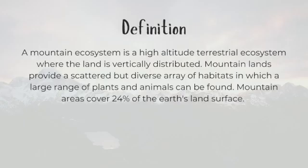A mountain ecosystem is a high-altitude terrestrial ecosystem where the land is vertically distributed. Mountain lands provide a scattered but diverse array of habitats in which a large range of plants and animals can be found. Mountain areas cover 24% of the Earth's land surface.